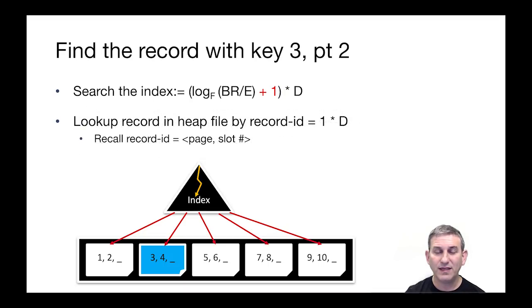Once we get down to the bottom of the index, then we have to go look up the record in the heap file, and that's another IO, which is 1D. Recall that what's in the leaf level of this index is a record ID, which is a page and a slot number. And so that helps us figure out what page to go to. We access it directly in a single IO.